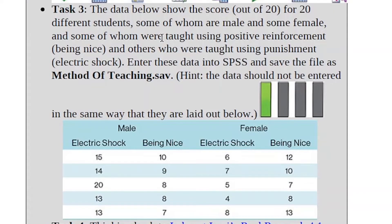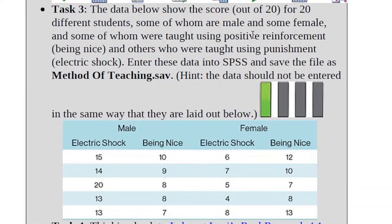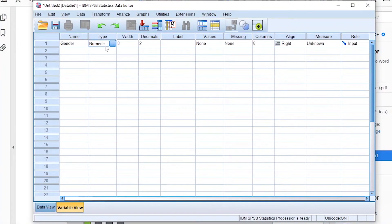When entering data into SPSS, always go to the variable view first to clearly define your variables. For example, the data below shows the score out of 20 for different students — some male, some female — some taught using positive reinforcement (being nice) and others using punishment (electric shock). The first variable we have is gender.